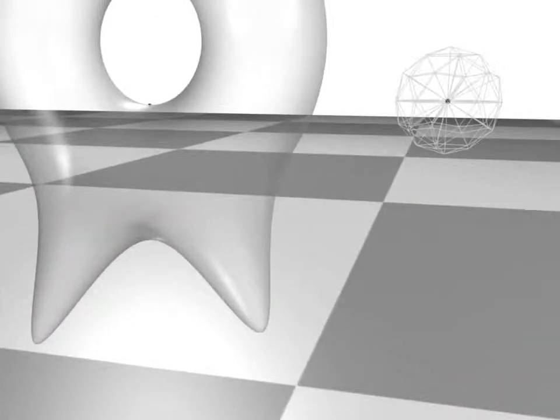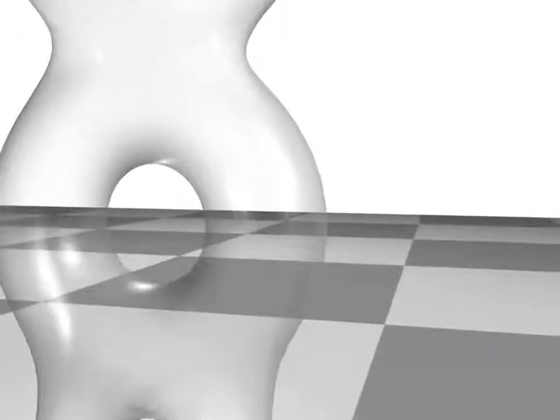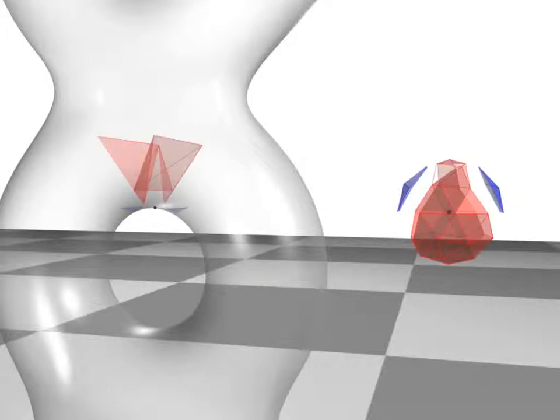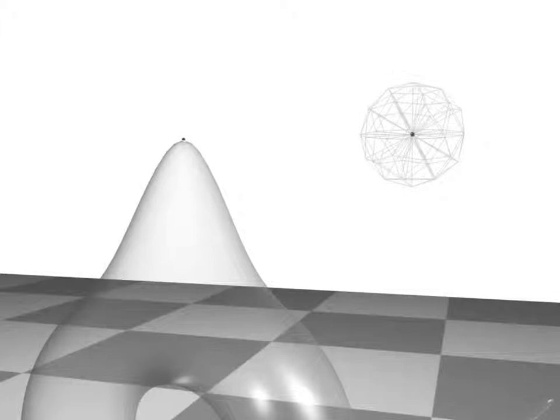An index 2 saddle has one component in its lower link and two components in its upper link. An index 1 saddle has two components in its lower link and one component in its upper link. The lower link of a maximum has one component, while its upper link is empty.